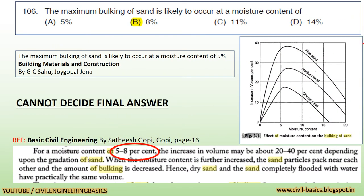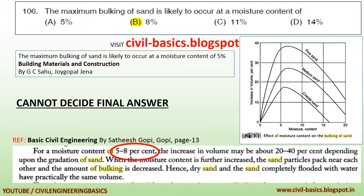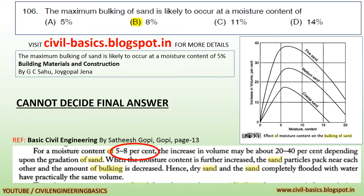Question: The maximum bulking of sand is likely to occur at a moisture content of: a) 5%, b) 8%, c) 11%, d) 14%. As per Building Materials and Construction by G.C. Suu and Joy Gopal Jainer, and as per Basic Civil Engineering by Sathesh Gopi, page 13, for a moisture content of 5% to 8%, the increase in volume may be about 20–40% depending upon the gradation of sand. From these references we cannot decide the final answer.